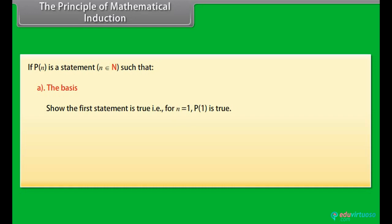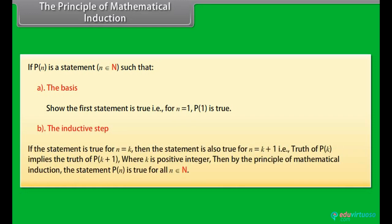The principle of mathematical induction: If P(N) is a statement, N belongs to N, such that the basis — the first statement is true, that is, for N equal to 1, P(1) is true. The inductive step: if the statement is true for N equal to K, then the statement is also true for N equal to K+1, that is, truth of P(K) implies the truth of P(K+1), where K is a positive integer. Then by the principle of mathematical induction, the statement P(N) is true for all N belonging to N.